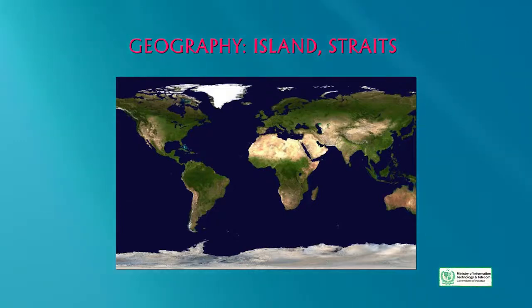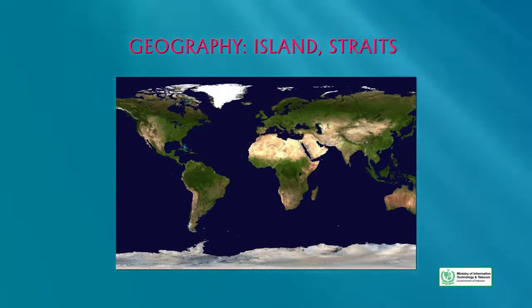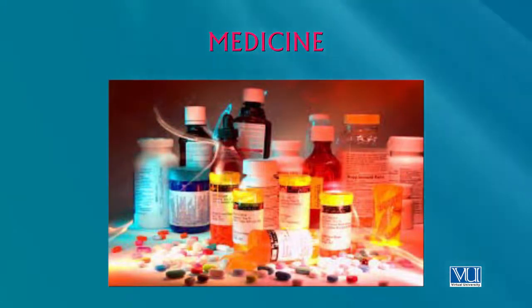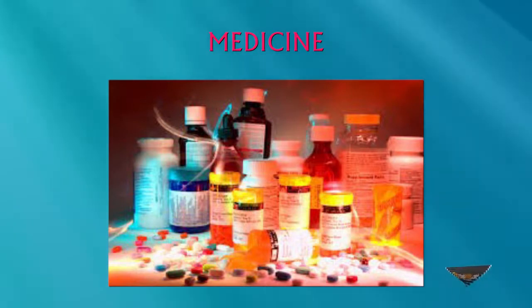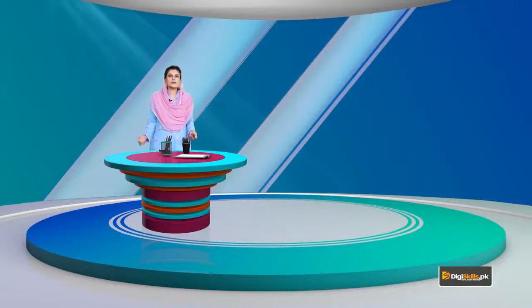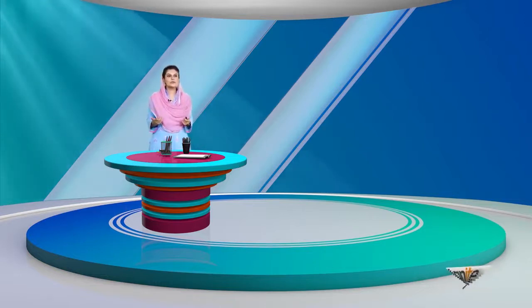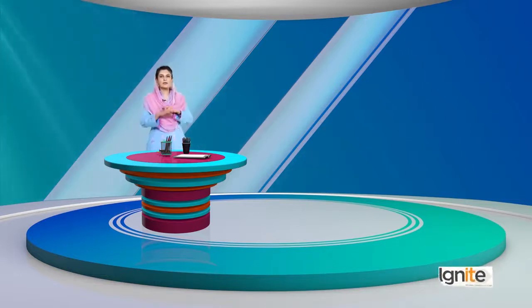If you write something on any subject — say, geography — you may refer to an island, straits, or other geographical forms, and it is helpful to know the exact terms. Similarly, in medicine, if you want to describe tools or a doctor doing surgery, you should know the exact terms for the surgical gown and the overall that doctors wear. These are all things you need to know — the nouns you must have full command of when writing on a specific topic or about a specific environment.